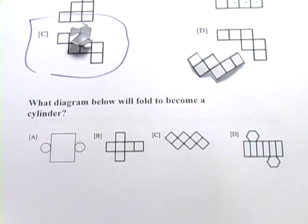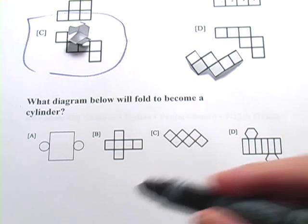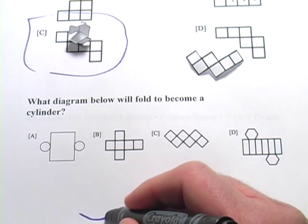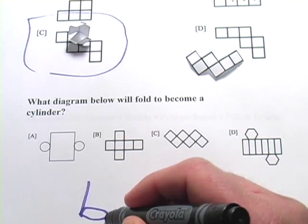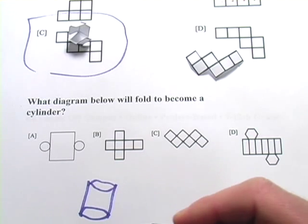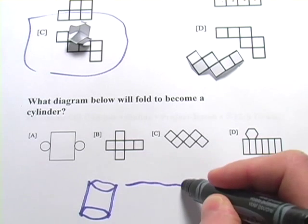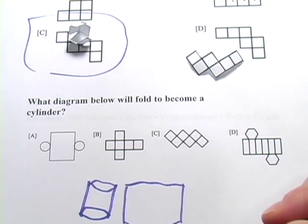Let's look at another one. This one might be a little bit easier. It says what diagram below will fold to become a cylinder? And you should know that a cylinder is like a soup can and it has two circular ends. And then this area in between the two circular ends, if you were to pull the label off of a soup can and flatten it out, it would be a rectangle.